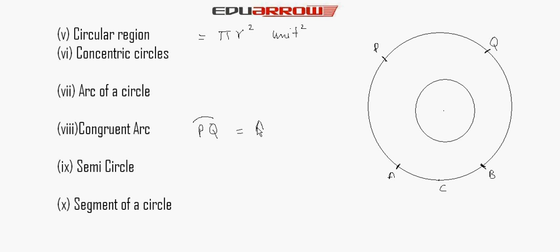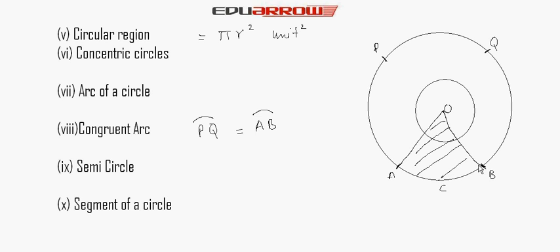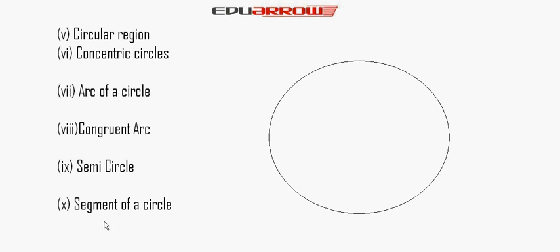Semicircle: A half part of a circle is called the semicircle. Segment of a circle: If we join points A and B to the center of a circle, the enclosed area is called the segment of a circle. There is a minor segment and a major segment — this one is minor and this one is major.